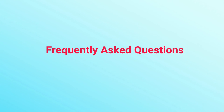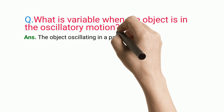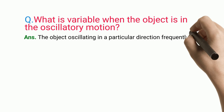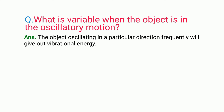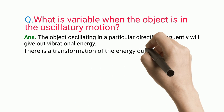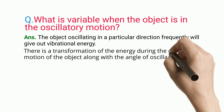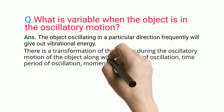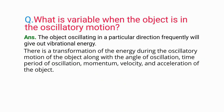Frequently Asked Questions. What is variable when the object is in oscillatory motion? The object oscillating in a particular direction frequently will give out vibrational energy. There is a transformation of energy during the oscillatory motion of the object along with the angle of oscillation, time period of oscillation, momentum, velocity, and acceleration of the object.